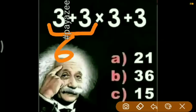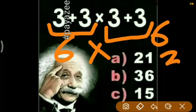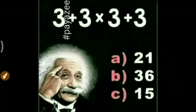The second way to solve the puzzle is 3 plus 3 is 6, and 3 plus 3 is 6, 6 into 6 is equal to 36. So there could be a possibility that 36 could be the answer.